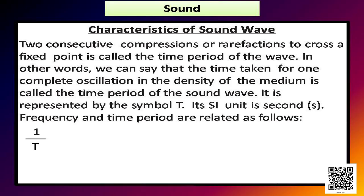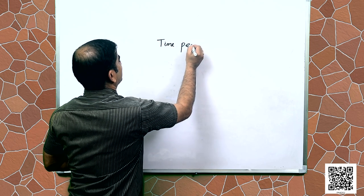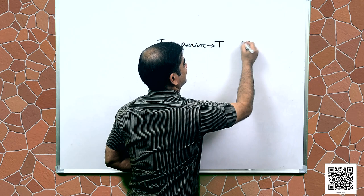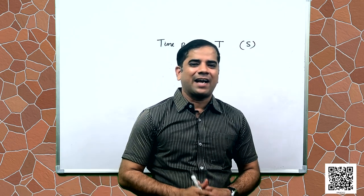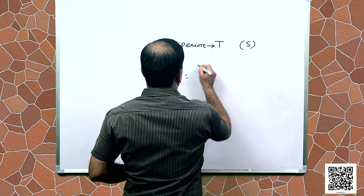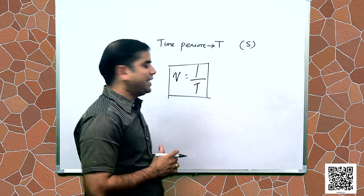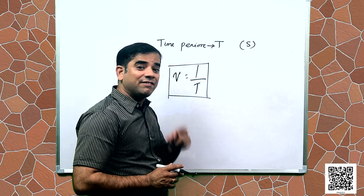The time taken by two consecutive compressions or rarefractions to cross a fixed point is called the time period of the wave. In other words, it is the time taken for one complete oscillation in the density of the medium. Time period is represented by the symbol T and its SI unit is second. Frequency and time period are related as ν = 1/T; they are inversely proportional to each other.